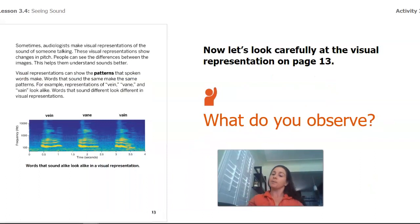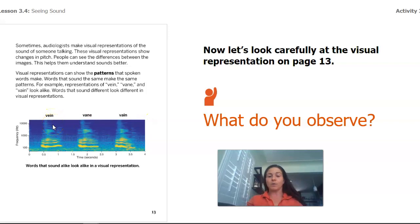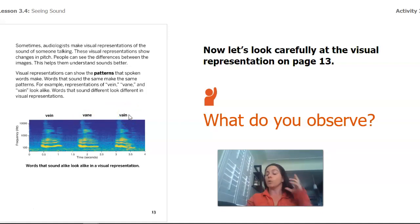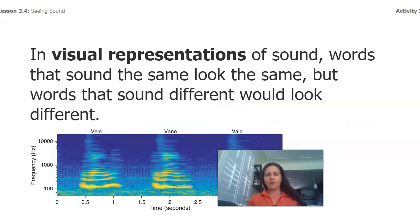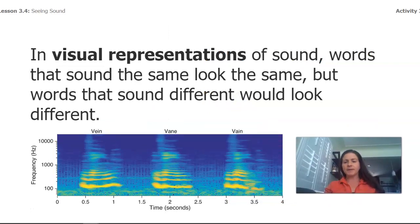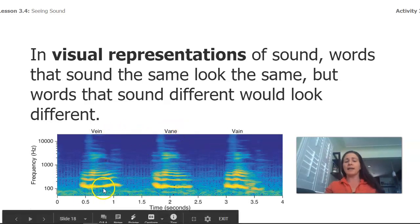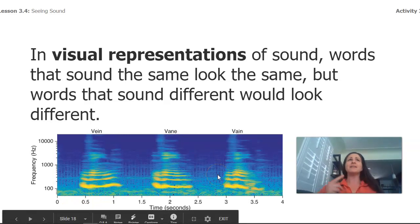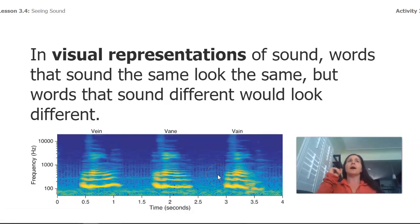Now let's look back at page 13. We pronounced three different words: vein — the ones inside your arm; vane — like a weather vane or wind vane; and vain — where you care a lot about your looks. So what do you observe? I observe the same thing that we saw in the reading: those sounds, those words, sound a lot alike, and the sound patterns look really similar. So that's another pattern — if a sound is similar, I wonder if the visual representation will always be similar.